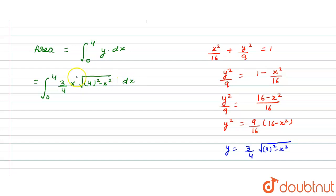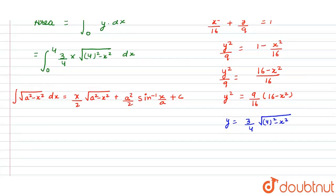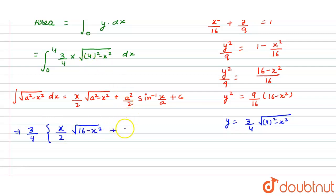So the area equals the integral from 0 to 4 of (3/4)√(4² − x²) dx. We use the standard integral property: ∫√(a² − x²) dx = (x/2)√(a² − x²) + (a²/2) sin⁻¹(x/a) + C. Applying this with a = 4, we get (3/4) times [(x/2)√(16 − x²) + 8 sin⁻¹(x/4)] evaluated from 0 to 4.